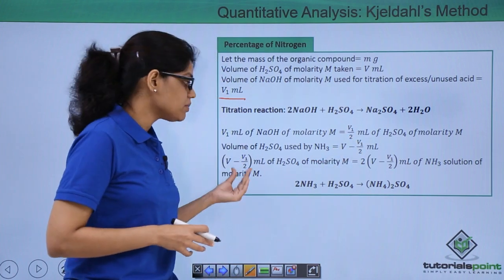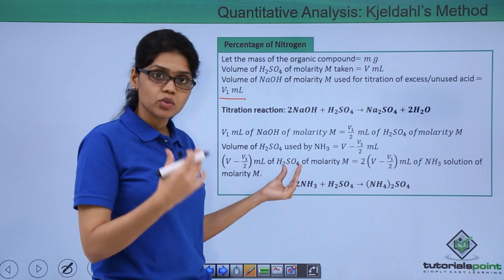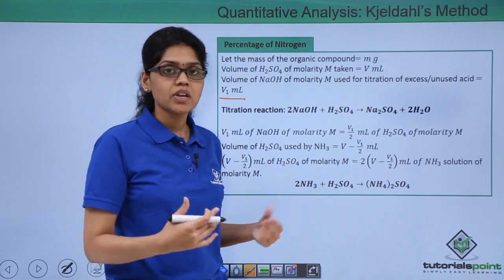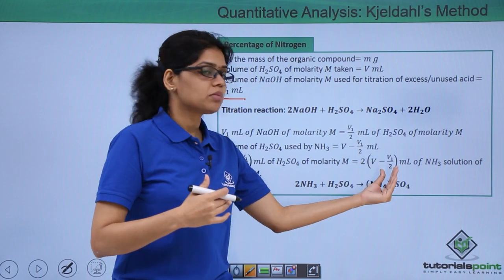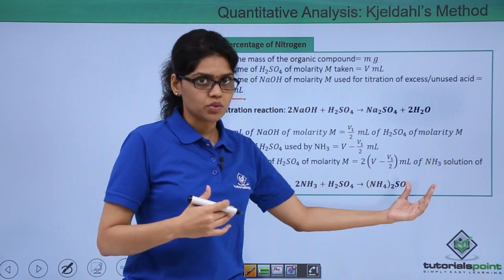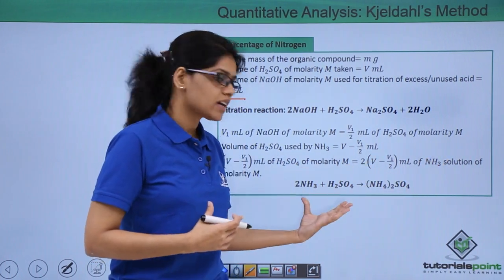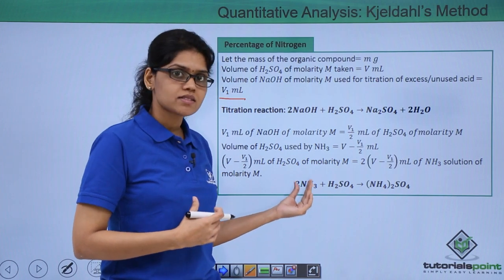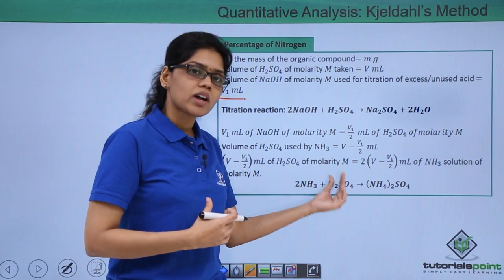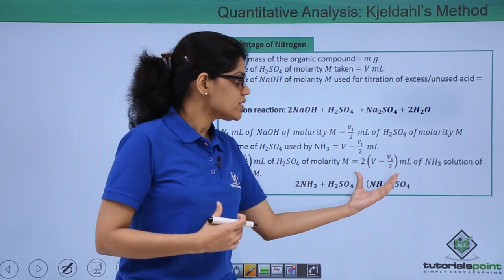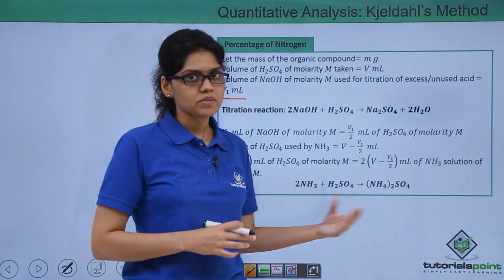You can see that V - V1/2 ml of sulfuric acid of molarity M would consume 2 × (V - V1/2) ml of ammonia solution. Because according to this reaction 2 moles of ammonia is required for the reaction with 1 mole of sulfuric acid to give us (NH4)2SO4 or ammonium sulfate.